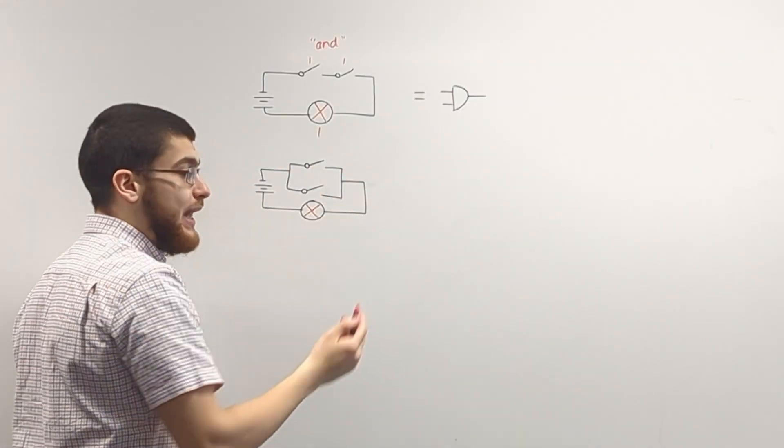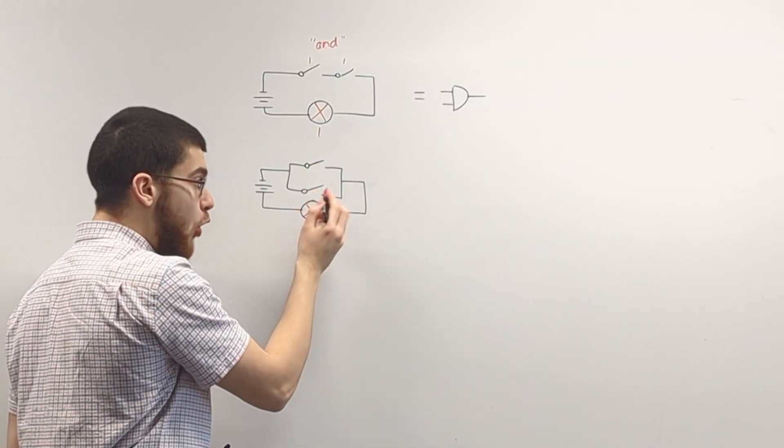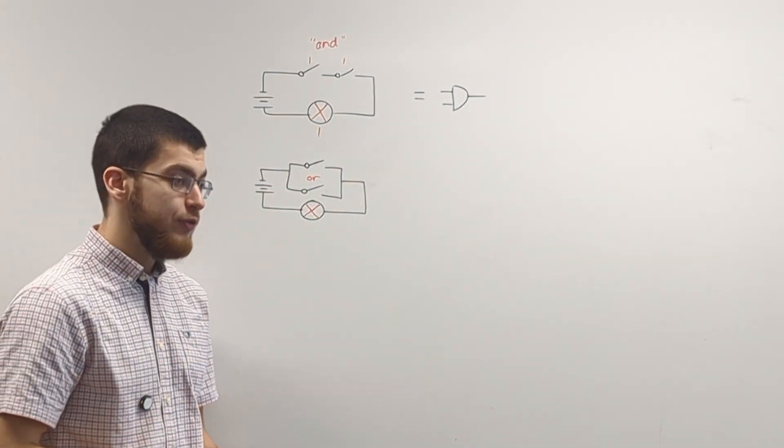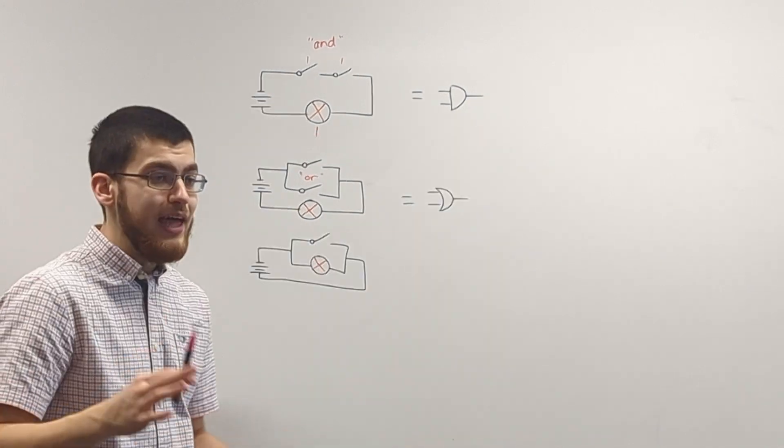Then he realised that if you connect up a circuit like this, then this switch or this switch or both have to be closed in order for the output to be on. So this is called an OR gate.